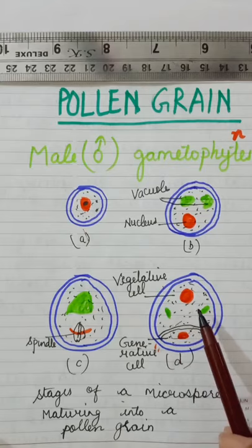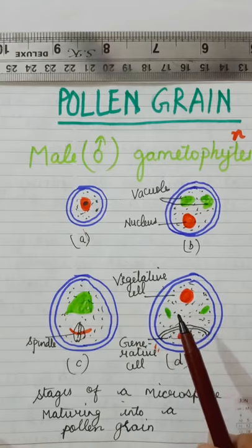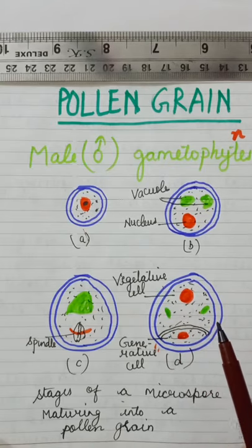Vacuoles are still there in this cytoplasm packed with organelles, starch grains, lipids and proteins.